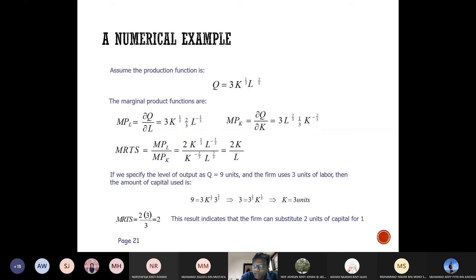Say if we specify the level of output Q as 9 units and the firm uses 3 units of labor, then the amount of capital used can be found by substituting directly into the production equation. Q is given as 9 and the firm uses 3 units of labor, so substitute L = 3 into the formula.